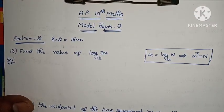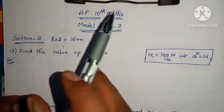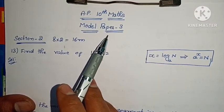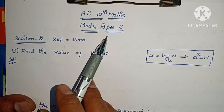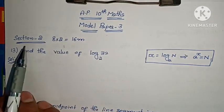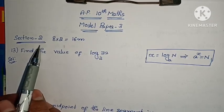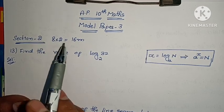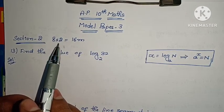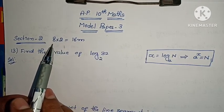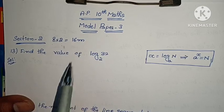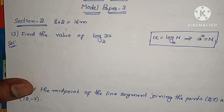Hi, welcome to Parnika Maths. In this 10th Maths Model Paper 3, we start with the last video section 1 complete. In this video, in section 2, there are problems and solutions. In this section, there are 2 marks problems, with 8 such problems, so the total is 16 marks.